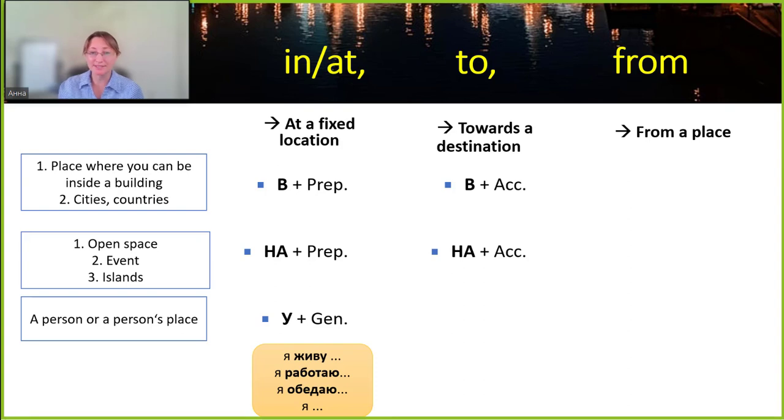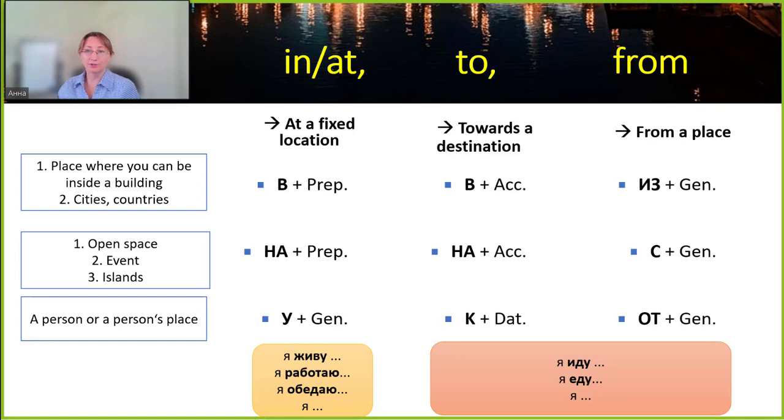Finally, if your destination is a person, then we will need the preposition К and the dative case. When we're moving from a location we are going to be using the preposition ИЗ plus the genitive case. We'll use the preposition С plus the genitive case coming back from open space locations, events, or islands. And finally, when we're coming from a person's place we will use the preposition ОТ and the genitive case again. Now, since both of these contexts require movement we can use the verbs ИДУ, ЕДУ for both of them.